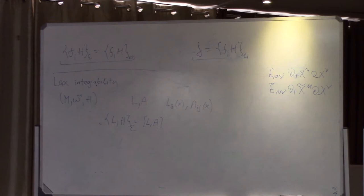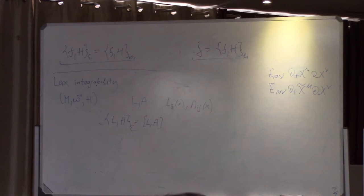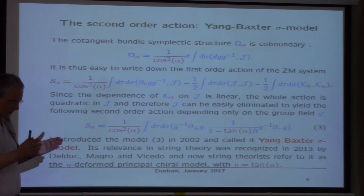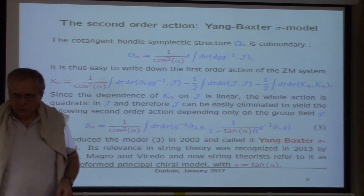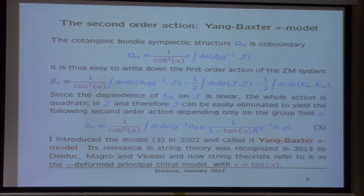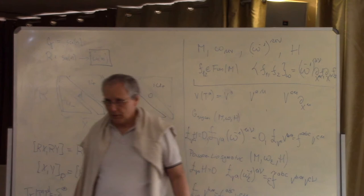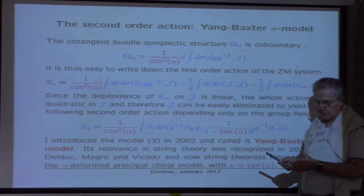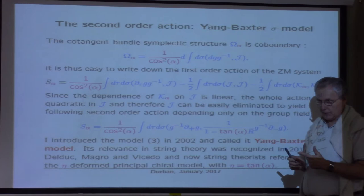This model has one interesting feature: if you renormalize it, it keeps the same form but the parameter α flows — it changes ε since tan(α) = ε. So renormalization flow changes ε. However, if you do the two modifications — adding the projector onto the homogeneous space and considering the supergroup that appears in ADS-CFT — then the beta function is zero, so it is conformal for whatever value of α.